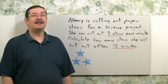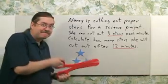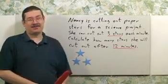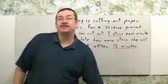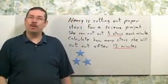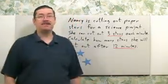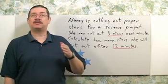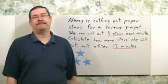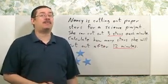After each minute, Nancy will have cut an additional 3 stars. The problem can be solved several ways. One way is to just add 3 twelve times: 3 plus 3 plus 3, etc.